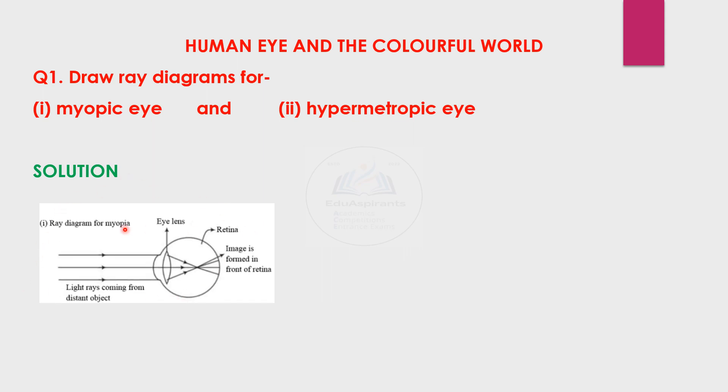So this is the ray diagram for myopic eye. The image you see here is formed ahead of the retina. Image is formed in front of retina. This is what is to be remembered. That's the parallel rays coming from distant object. This is the retina area.